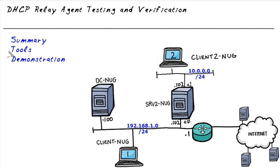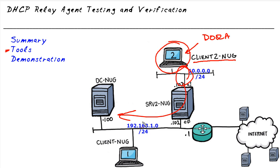As far as testing tools, we have a client machine sitting on the 10.0.0 network: it is client2-nug. We can tell it to use a dynamically learned IP address and DNS server, which should trigger the DORA process on the local network. If the relay is working, it will relay that information back to the server, the server should respond, and then Server 2, acting like a DHCP proxy, will interact with Client 2 to pass on those messages.